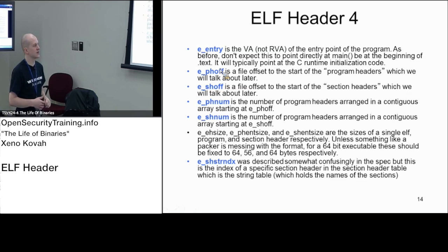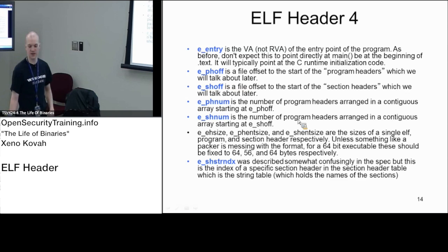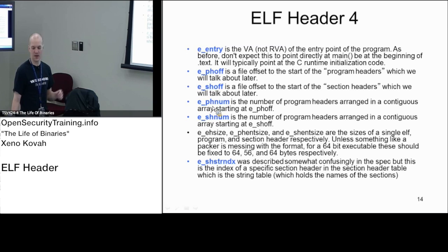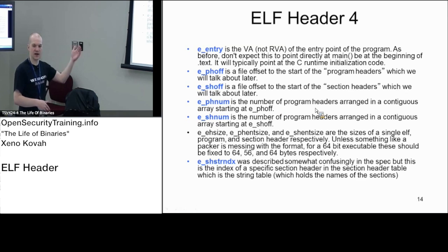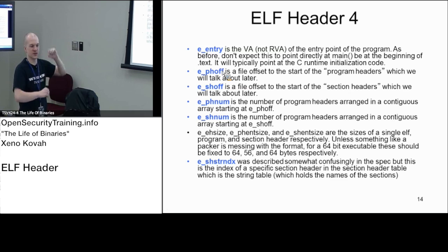Now we get into the stuff that tells us how to get to the program headers and section headers. e_phoff is the program headers offset — it's just saying what's the file offset to get to the program headers. Then e_phnum gives you the number of program headers, telling you how many segments there are going to be. e_phnum is saying this is the count of program headers contiguous starting at the PH offset.